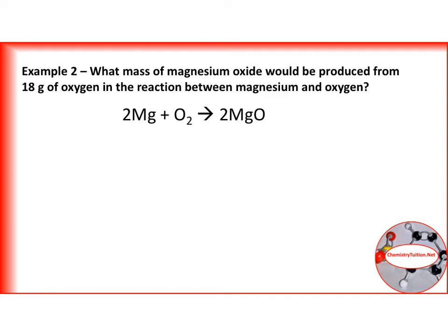So we know that we have got 18 grams of oxygen. So the first thing we need to do is we need to work out the number of moles of oxygen we have.